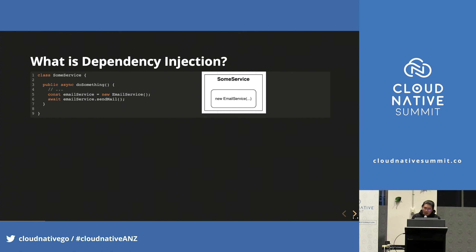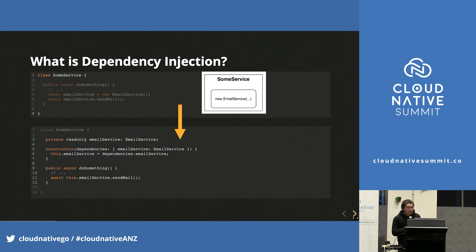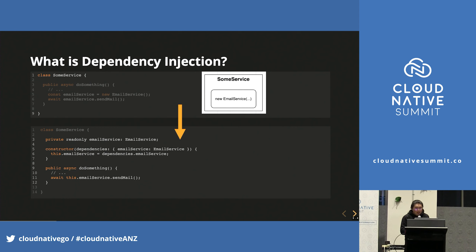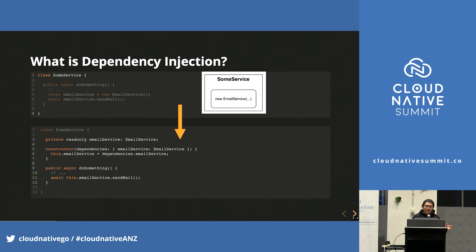So what would the version look like with DI? Here it is. SomeService now gets the instance of EmailService from the constructor. Thus, it does not instantiate EmailService internally anymore. In this case, we say EmailService is a dependency of SomeService, and the dependency is injected via the constructor.